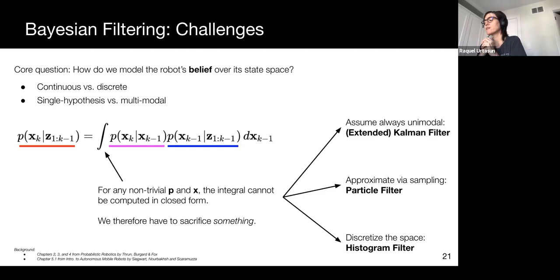Its unimodal nature means that it is unable to track multiple hypotheses. Particle filters can bypass some of these issues and approximate the quantities by sampling.